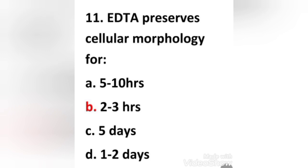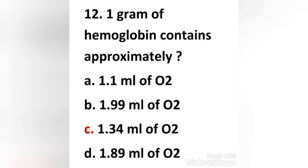Next question: EDTA preserves cellular morphology for — (a) 5 to 10 hours, (b) 2 to 3 hours, (c) 5 days, (d) 1 to 2 days. The right answer is option B: EDTA preserves cellular morphology for 2 to 3 hours.